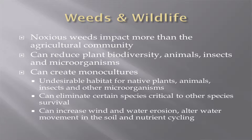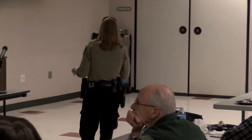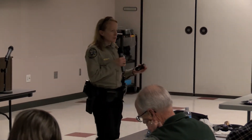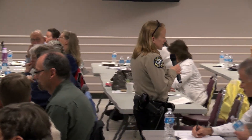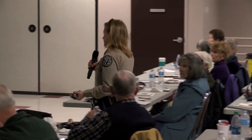It has more of an impact than just the agricultural community — it's everywhere. It can reduce plant biodiversity, animals, insects, and microorganisms, and it can create monocultures. That mustard plant monoculture completely encompassed about two or three acres with nothing else there. This is undesirable habitat for native plants, animals, insects, and microorganisms. Even if it's not a noxious weed, a monoculture makes it very hard for animals to live there because they can't find food, water, space, and shelter.